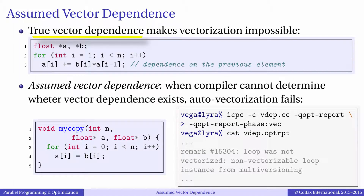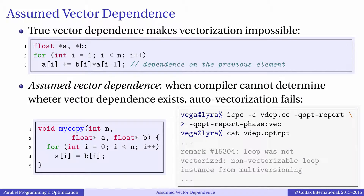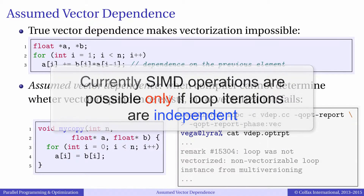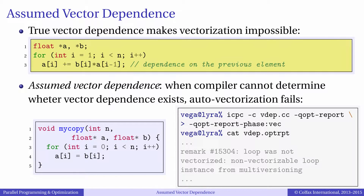Vector dependence is a condition in loops that requires that loop iterations are executed in certain order and not independently. Loops with vector dependence generally cannot be vectorized, neither by the compiler nor manually, because SIMD operations are possible only if loop iterations are independent. This code listing demonstrates a case of true vector dependence — in order to compute a[i] we need to know a[i-1] beforehand, so it is impossible to vectorize such a loop.